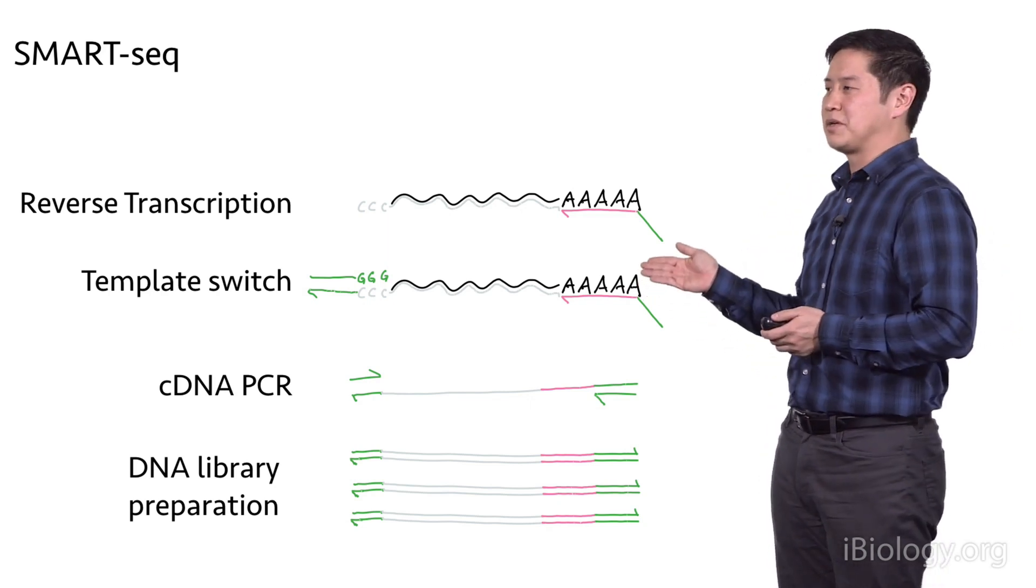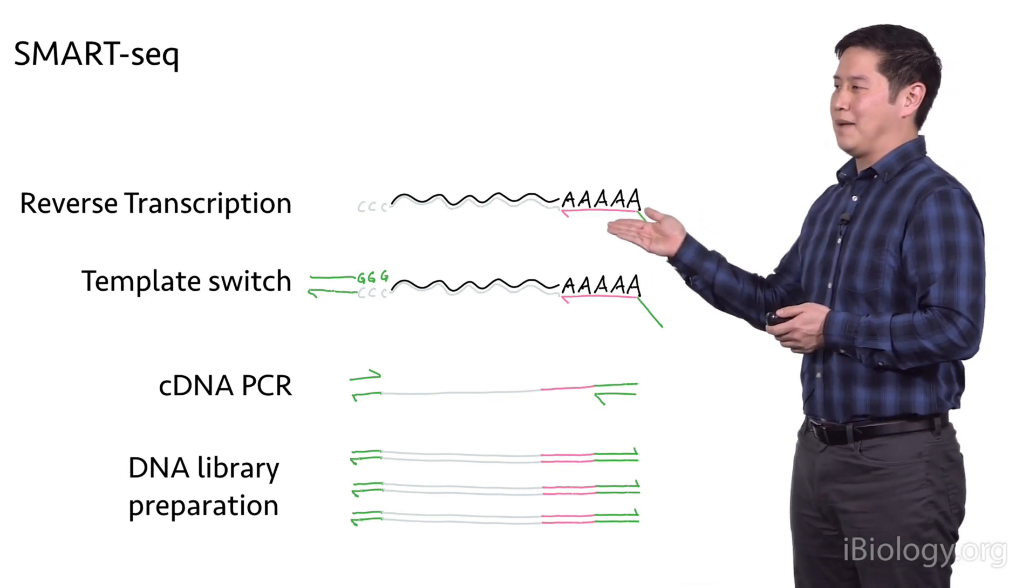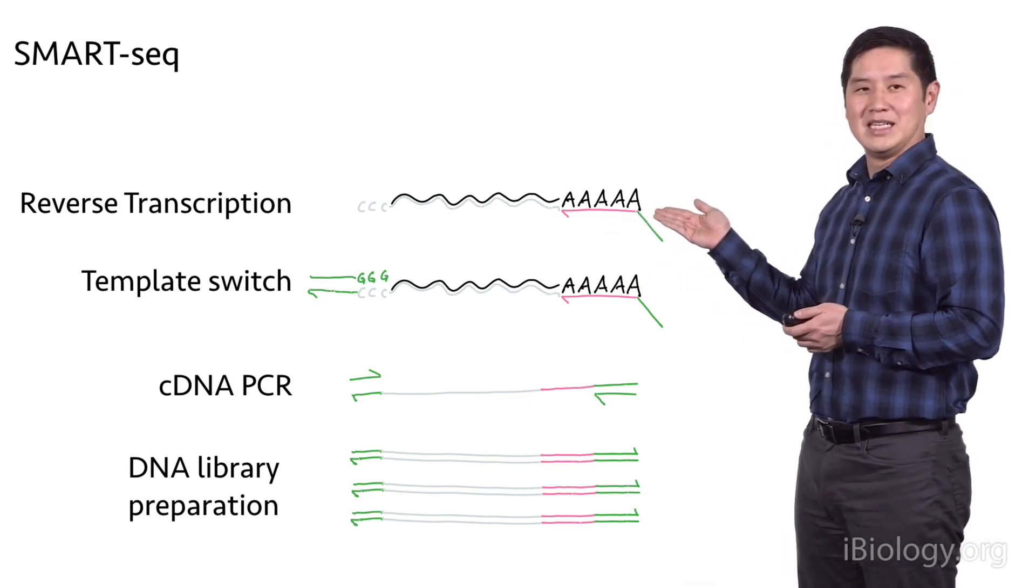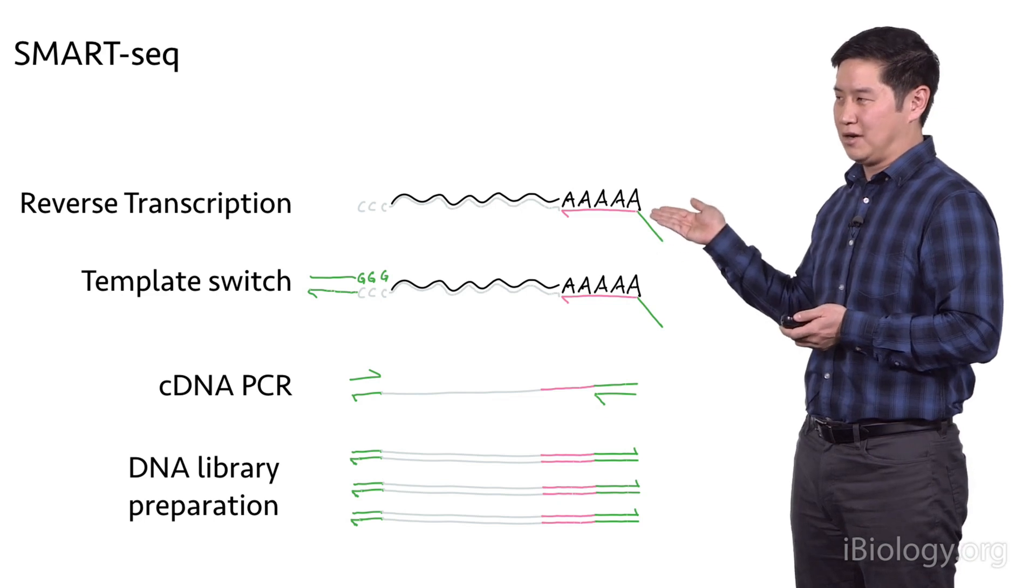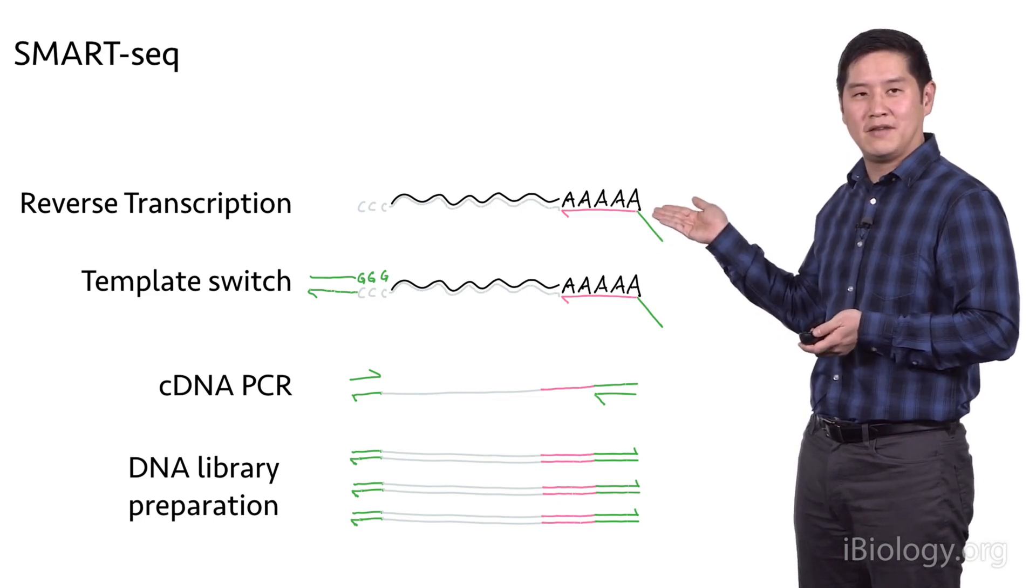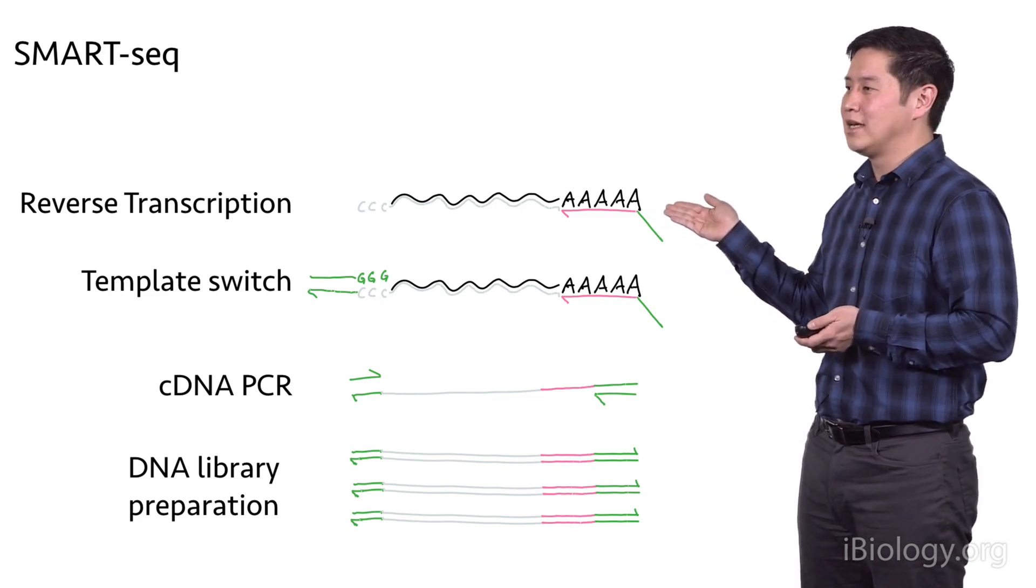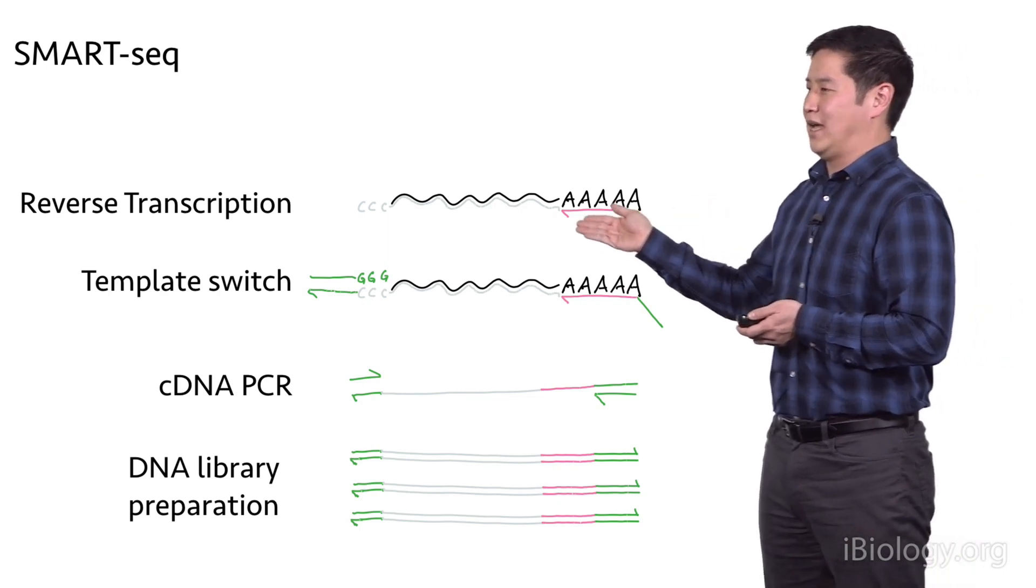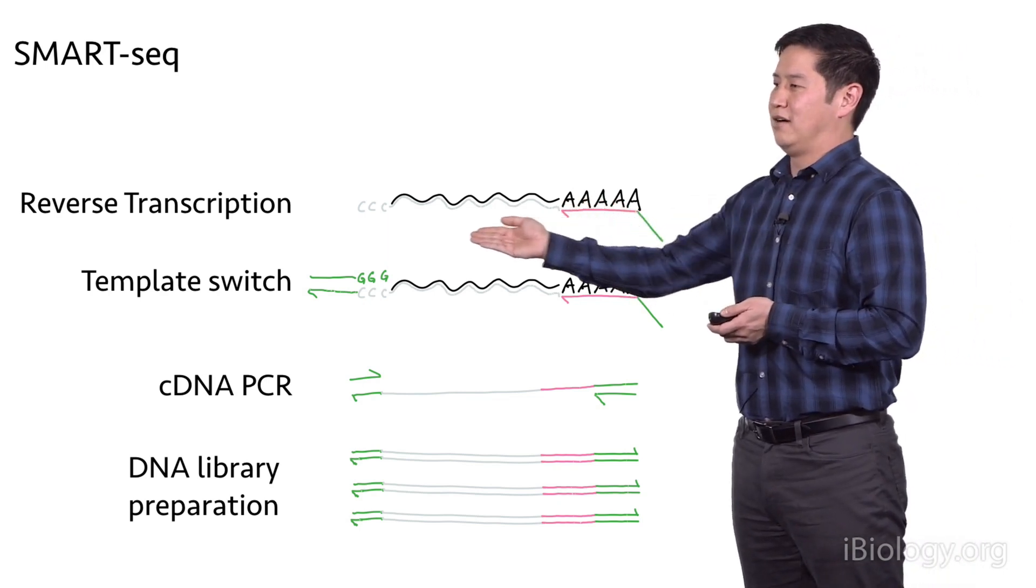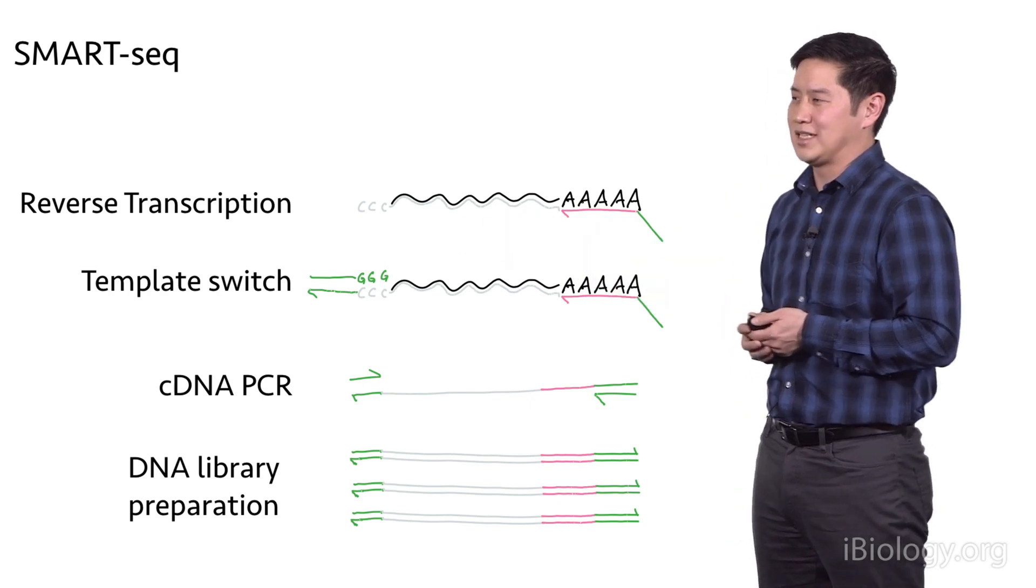This is because the reverse transcription reaction is primed by an oligo-dT, which will only bind to your messenger RNAs that have these poly-A tails at the end. You go through this reverse transcription reaction, and it'll make this copy of DNA using RNA as a template.